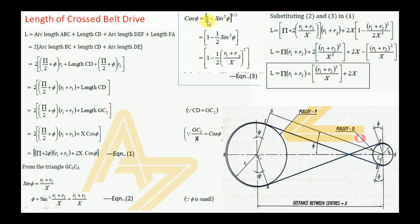For cos π, we write cos π = (1 − sin²π)^(1/2). Using the binomial theorem, this becomes 1 − (1/2)sin²π. Substituting the value of sin π already found, we get cos π = 1 − (1/2)·(r1 + r2)² / x². This is Equation 3. Now we substitute Equations 2 and 3 into Equation 1.